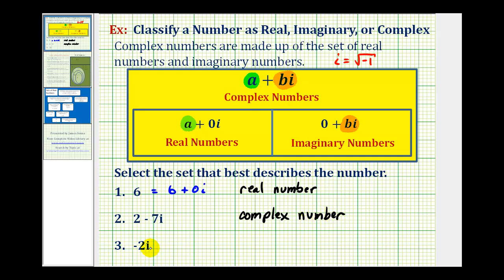And then for the last example, we have negative 2i, which if we wanted to, we could think of this as 0 minus 2i. So again, this is a complex number, but since a, the real part, is equal to zero, it's better to describe negative 2i as an imaginary number. I hope you found this helpful.